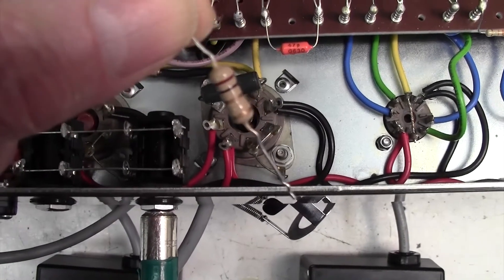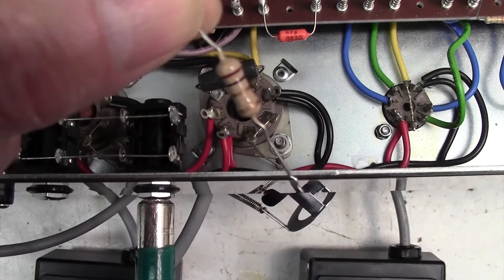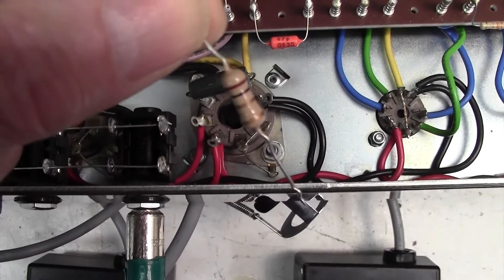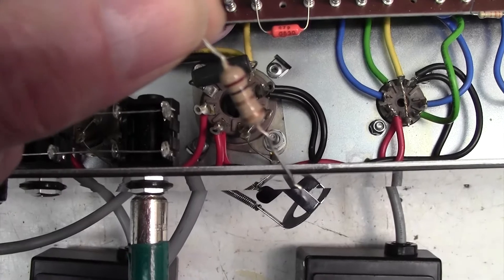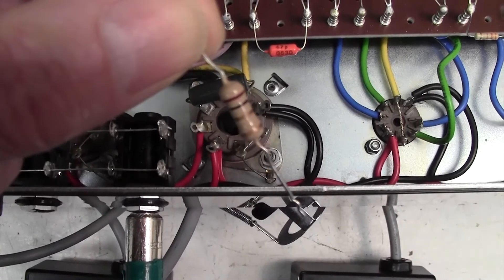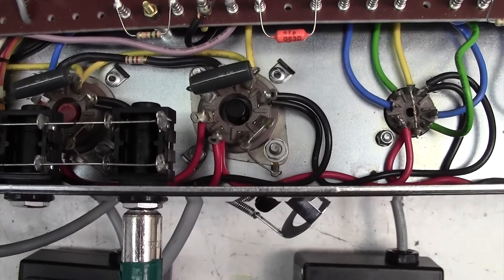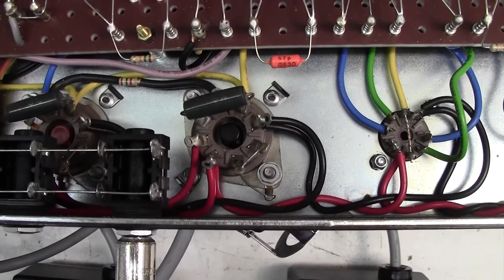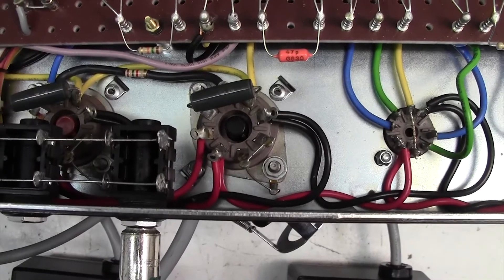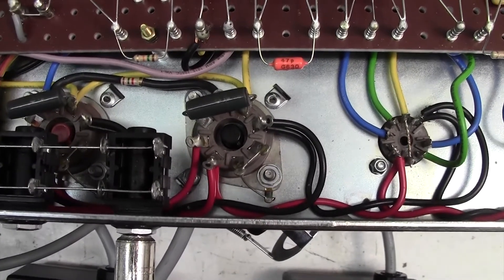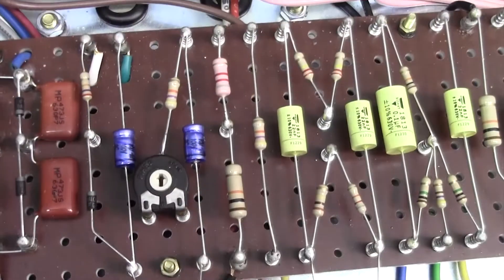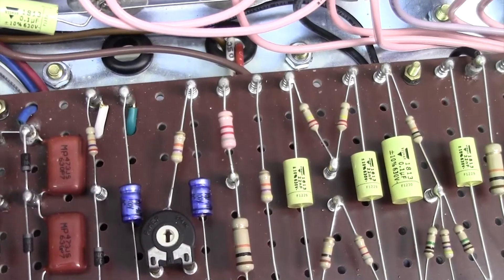30 millivolts read on the meter would be 30 milliamps, so we can directly read off just by clipping a multimeter across our 1 ohm resistor the cathode current or the tube current going through any output tube. So that's a really neat way of biasing an amp without using a bias meter.